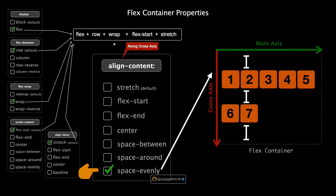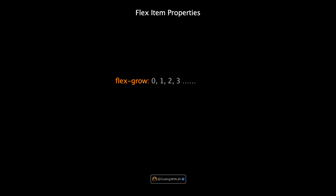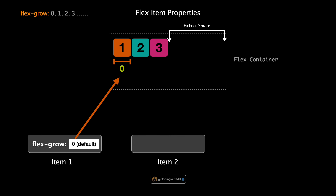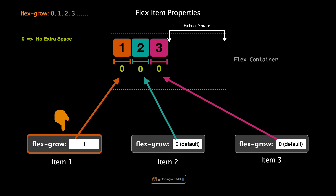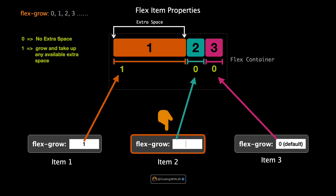That wraps up align-content — crucial for managing how lines of items align and distribute space in multi-line flex containers. Now we explore flex item properties. The first is flex-grow, which determines how much of the remaining space in the flex container should be assigned to each item. By default, flex-grow is set to zero, meaning items only take up as much space as their content needs. Watch what happens when we set the flex-grow of the first item to one — it now grows to take up all the remaining space after allocating space for the second and third items.